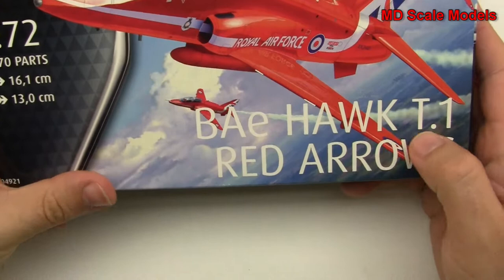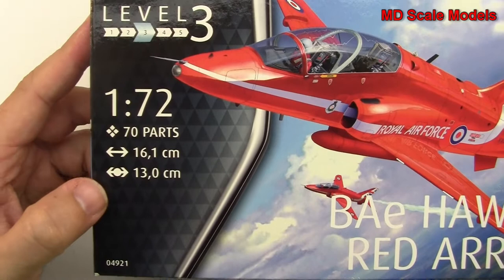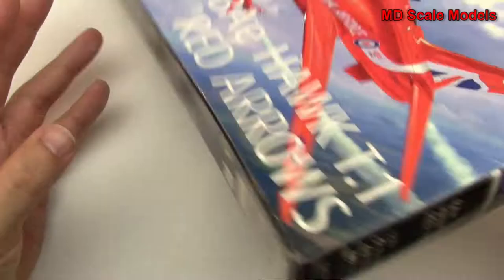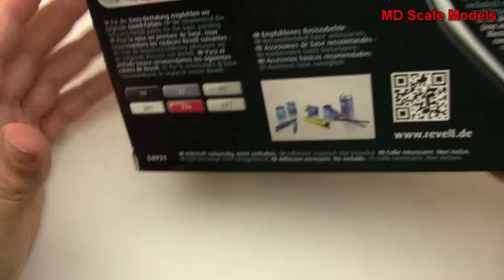This model kit review is of the BAE Hawk T1, the trainer, and this is the Red Arrows version. It's got some very nice box art. It's a 1:72 scale model by Revell, and here are the dimensions. This is actually Revell of Germany, which usually is better quality.